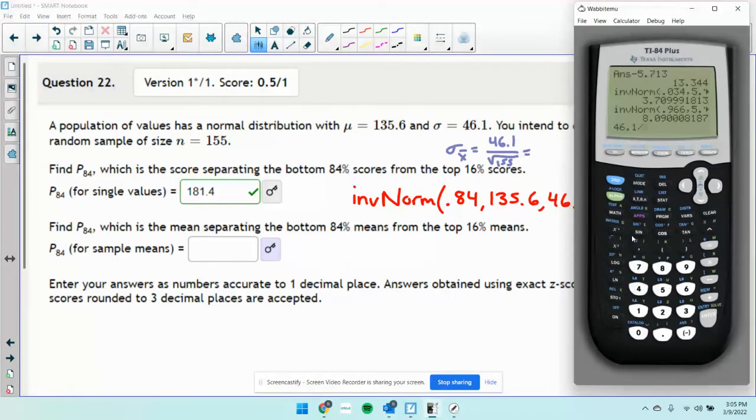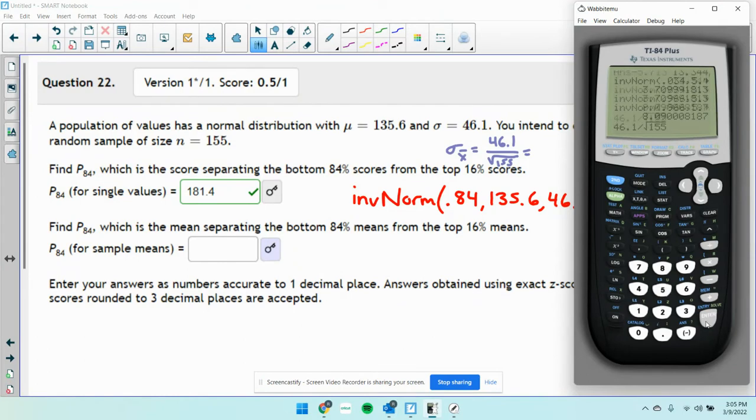46.1 divided by the square root of 155 equals 3.703.